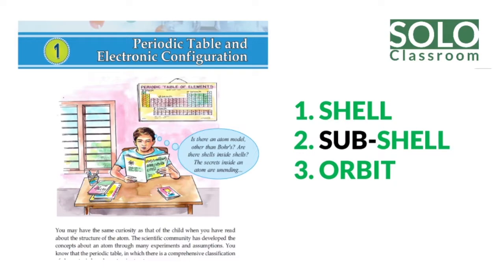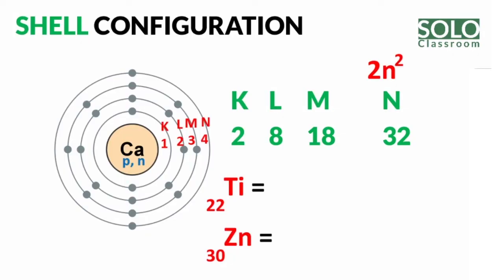Let's look at one part in detail. At the center is the nucleus, which contains protons and neutrons. Electrons carry a negative charge and protons carry a positive charge. Let's take a look at this electronic configuration.